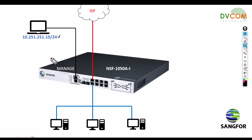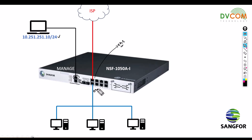I just want to configure one interface for internet — you can see here there is eth1, which you can call it as eth1. And there is another interface which is eth2, so this interface I am planning to configure for my lab. But before you step into the configuration, you need to understand one interesting thing.